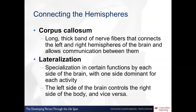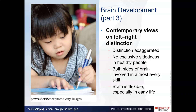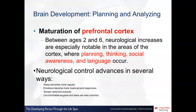Keep in mind these are broad generalizations — both hemispheres constantly work together. There is no exclusive sightedness in healthy people; both hemispheres are constantly working. Both sides of the brain are involved in almost every skill, and the brain is very flexible.